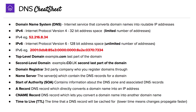Then we have some records of interest here. We have the SOA, which contains information about the DNS zone and associated DNS records. We have A records, which directly convert a domain name into an IP address. Then we have CNAME records, which let you convert a domain name into another domain name.